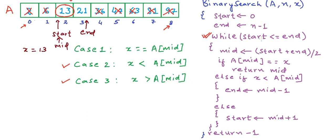Now why the while condition 'start less than or equal to end'? What we are basically doing is reducing our search space by adjusting the start and end pointers. There must be an exit condition. The exit condition is either we find the element, or we exhaust the whole search space. When start equals end, our search space has only one element. When this condition becomes false, we have exhausted the search space, we exit the loop and return minus 1 to indicate that x does not exist in the array.